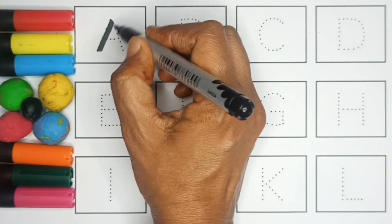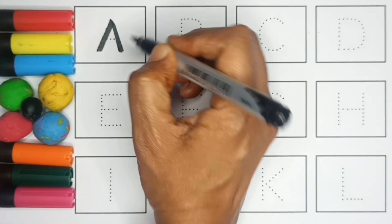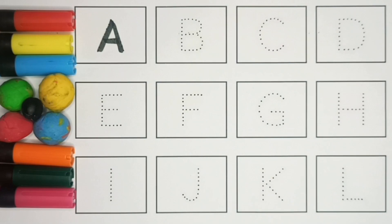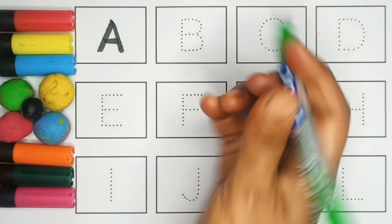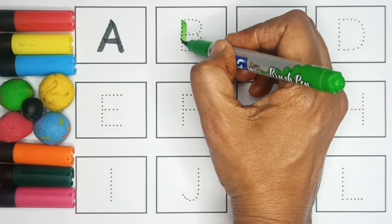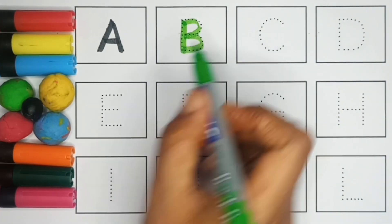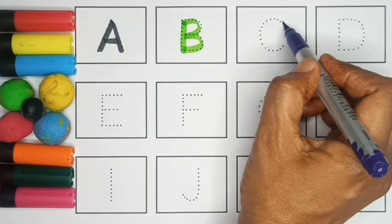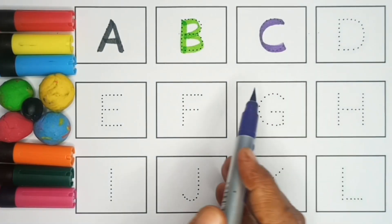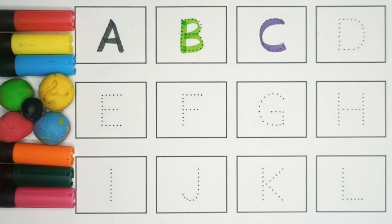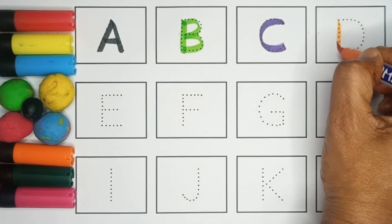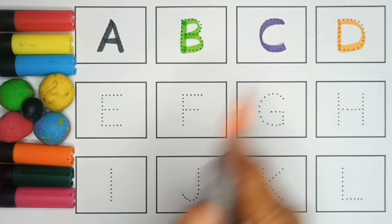A. A for apple. B. B for ball. C. C for cat. D. D for dog.